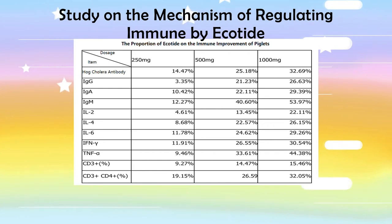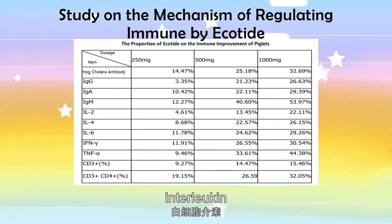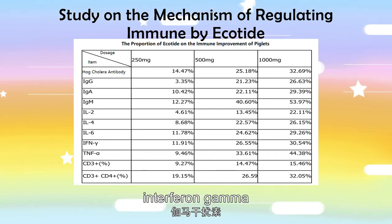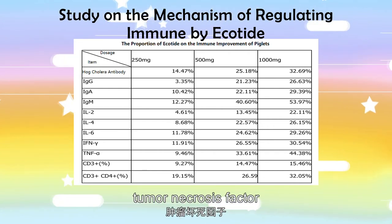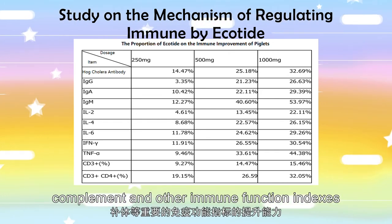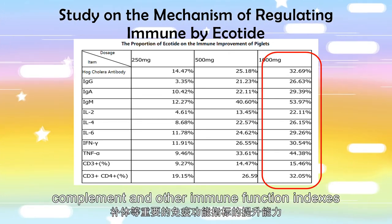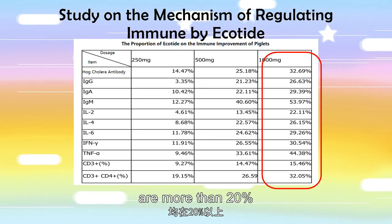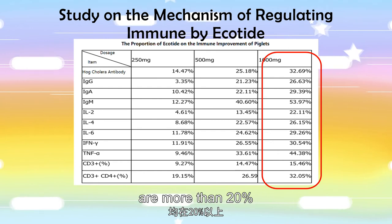Immunoglobulin, interleukin, interferon gamma, tumor necrosis factor, complement, and other immune function indexes were all improved by more than 20%.